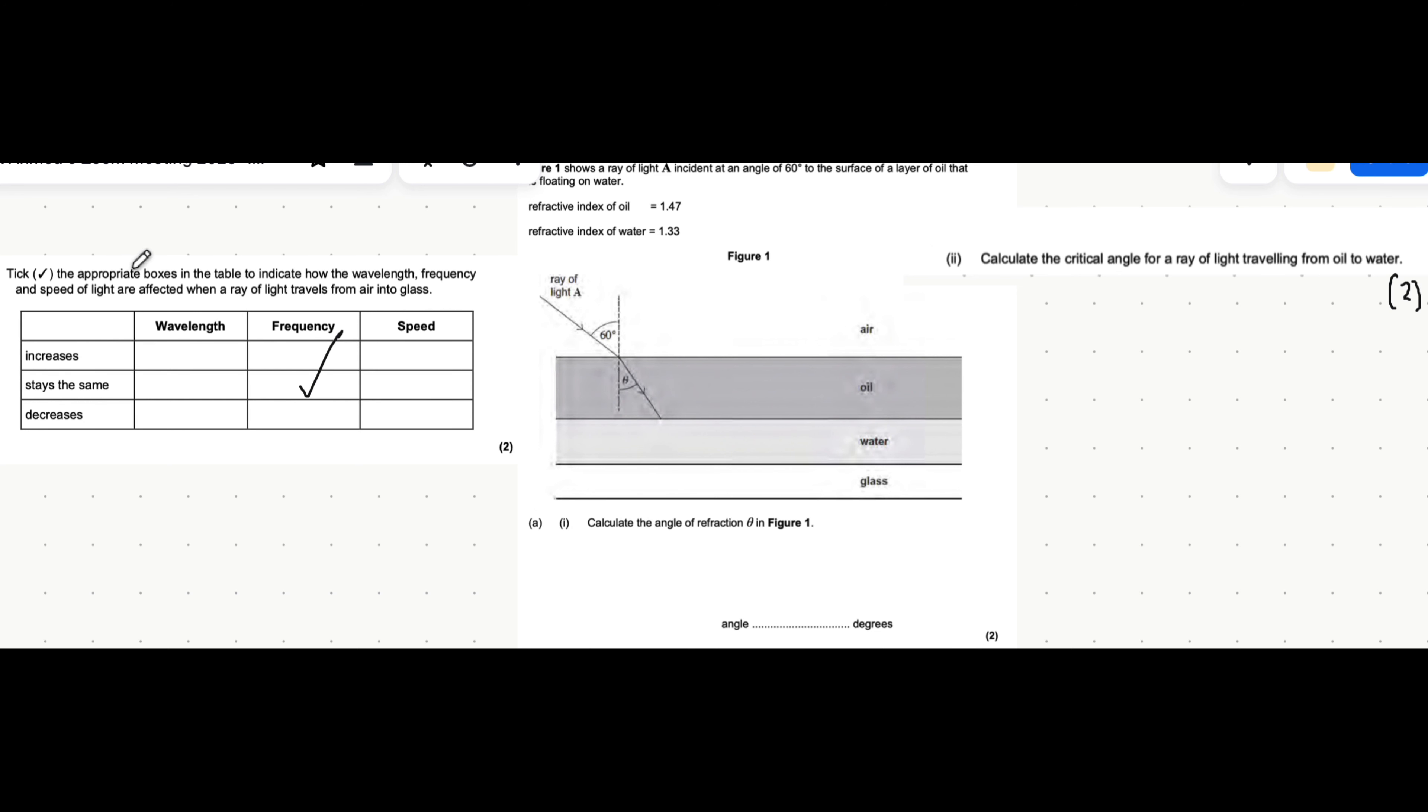Now, filling in the rest of the table, it says tick the appropriate boxes to show how wavelength, frequency, and speed of light are changed when a ray of light travels from air to glass. So air always has a refractive index of 1. That's what you have to sort of know according to the specification. Now glass has a refractive index we don't know exactly what that is, but we know it's definitely bigger than 1. So here we're going from a lower to a higher refractive index.